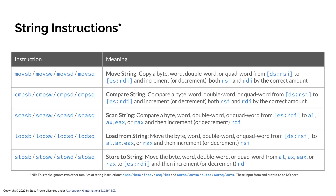The number of things it copies is based on what's in RCX. Compare string compares byte, word, double word, or quad word from the source to the destination, incrementing RSI and RDI each time. Scan string is a little different — the two above use both the source and destination registers, but scan string compares a byte, word, double word, or quad word from RDI to AL, AX, EAX, or RAX. We take the destination and check it against AL if it's a byte, AX if it's a word, EAX for double word, and RAX for quad word. There is a suffix: SCAS for scan, B for byte, W for word, D for double word, or Q for quad word. We can decrement RDI each time.